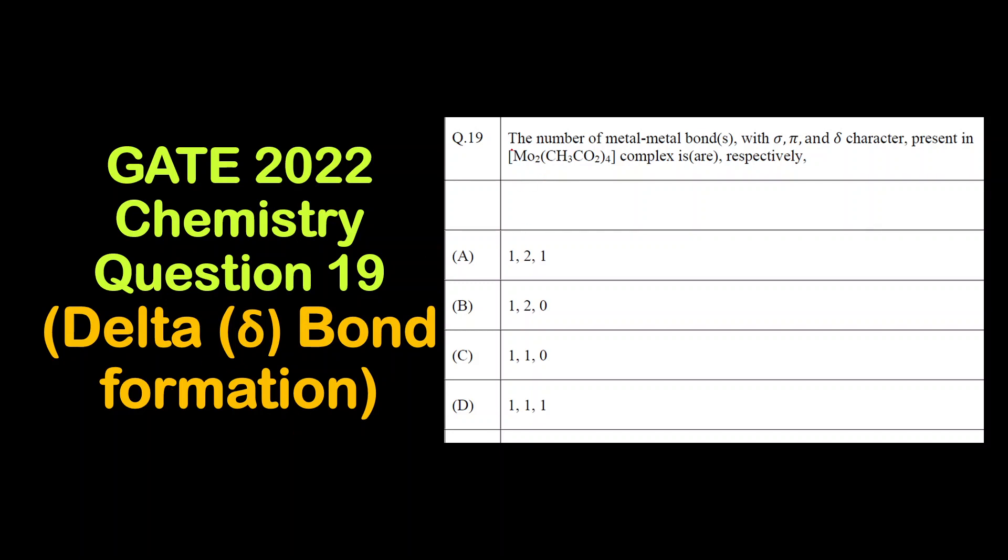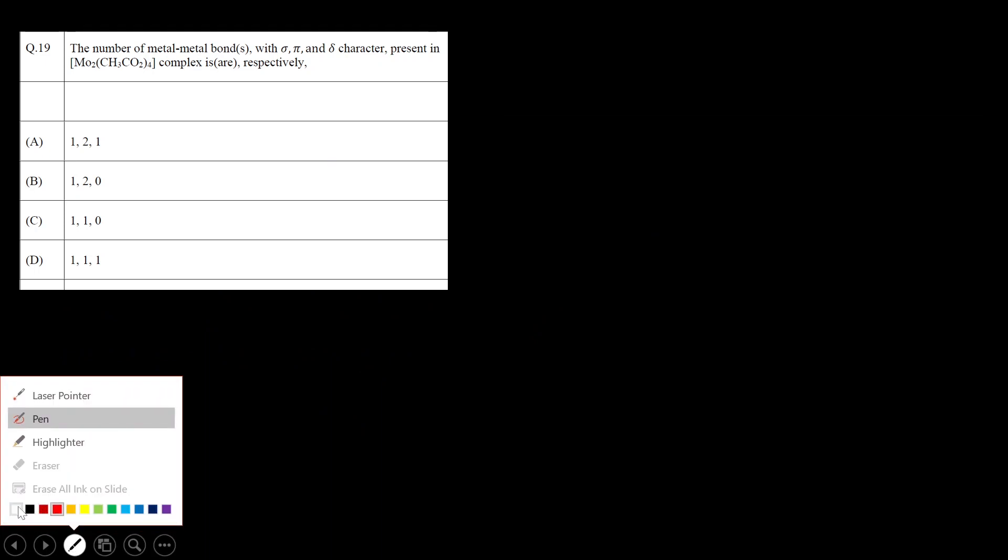This is based on delta bond formation. The question asks: the number of metal-metal bonds with sigma, pi and delta character present in this complex are. First step is to find out the total metal-metal bonds in this complex.